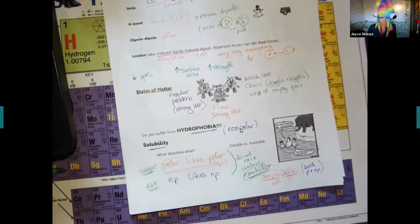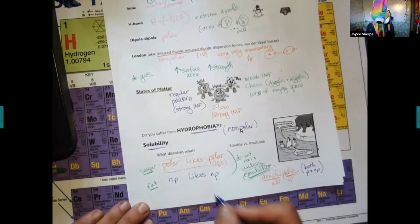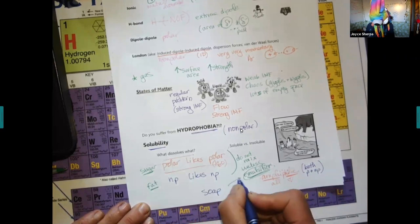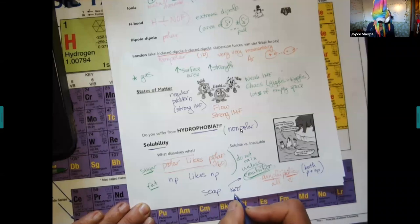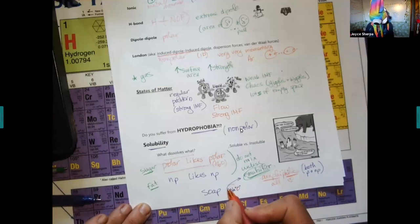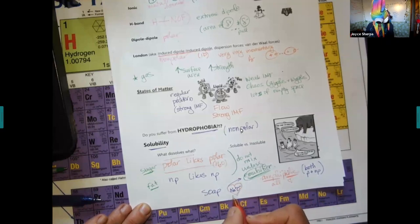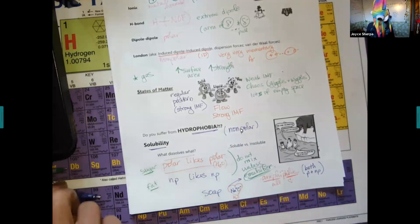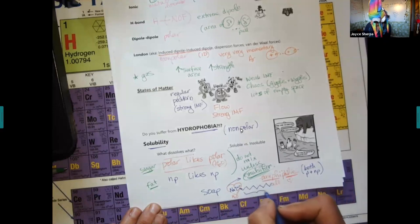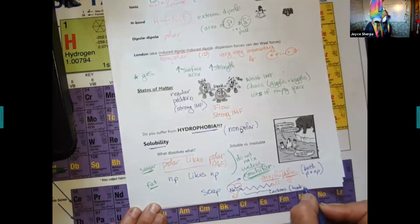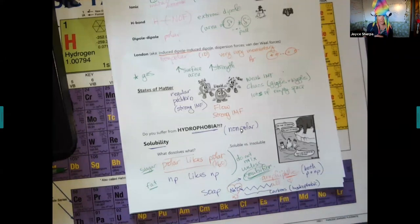An example would be soap. Soap is an emulsifier. It's why soap works so well. Soap has this ionic end. That ionic end is polar. It loves water. Ions love water. Then it has all this zigzag. These are carbons which are hydrophobic.